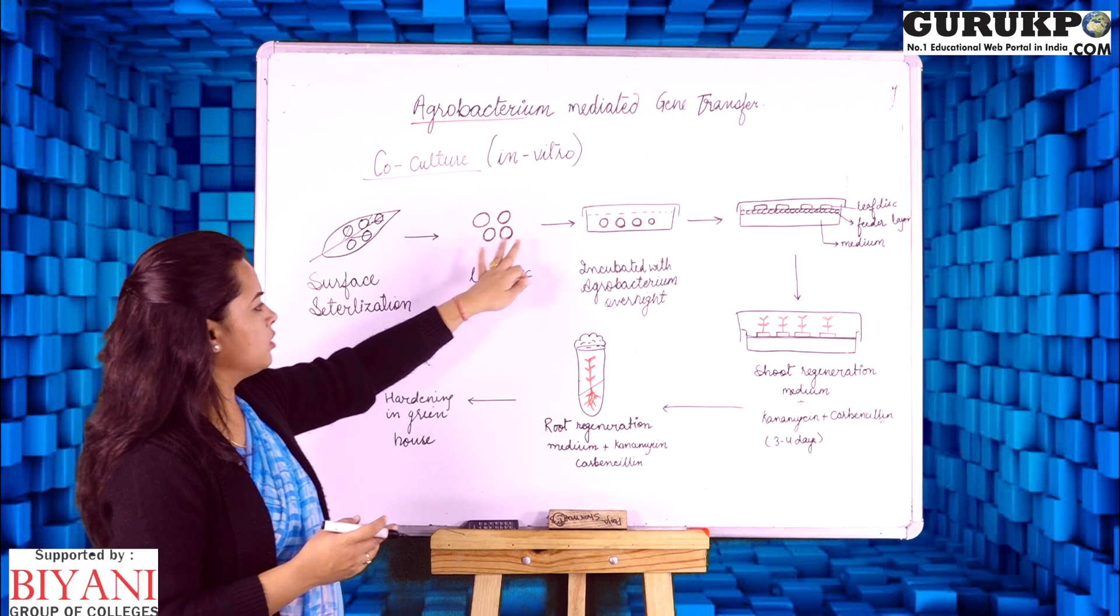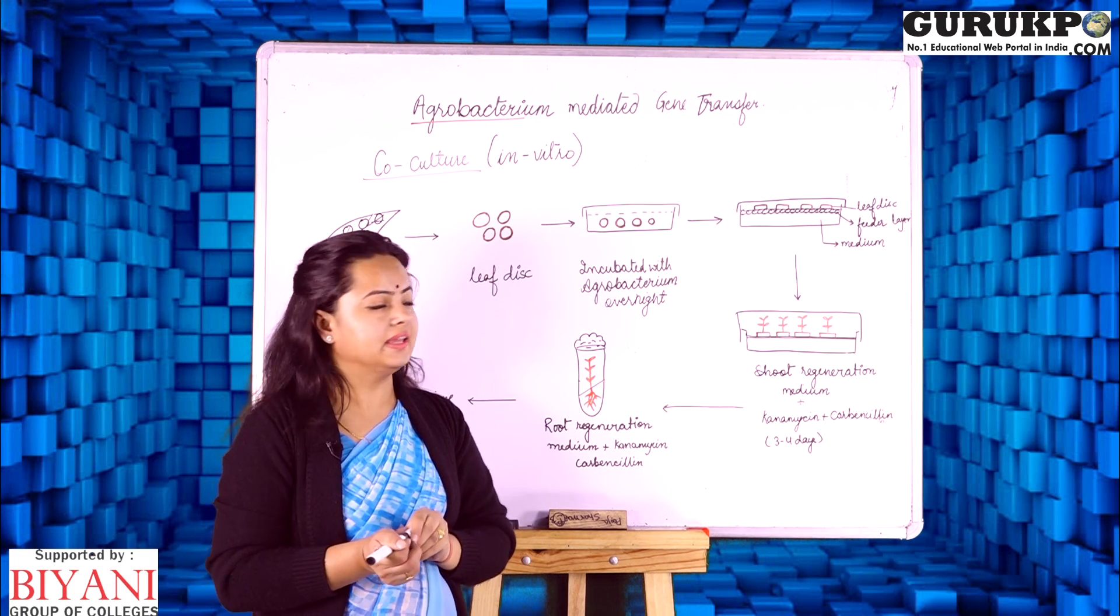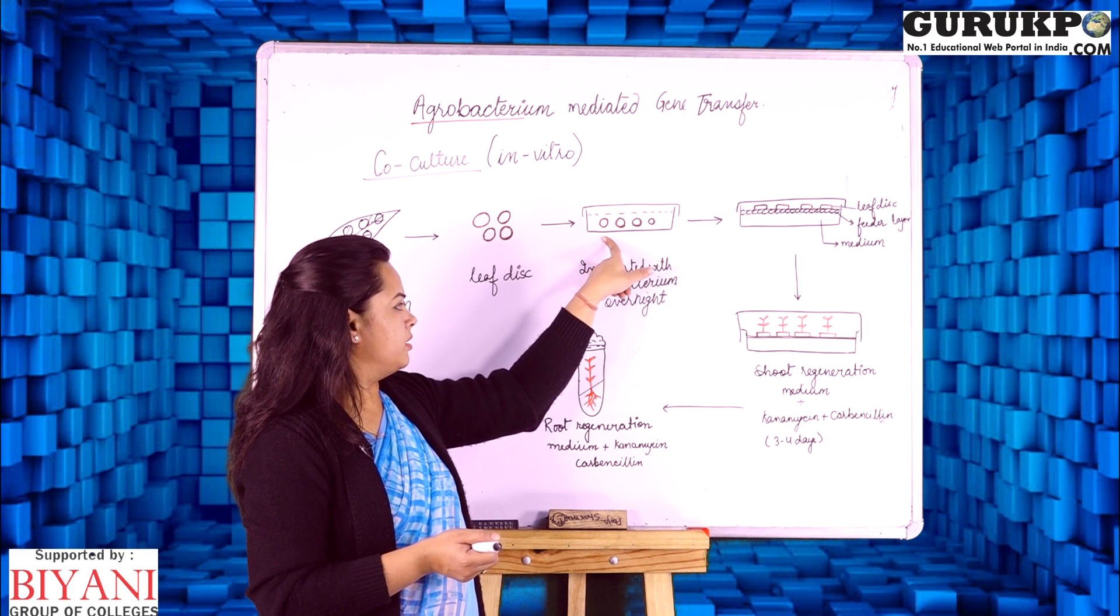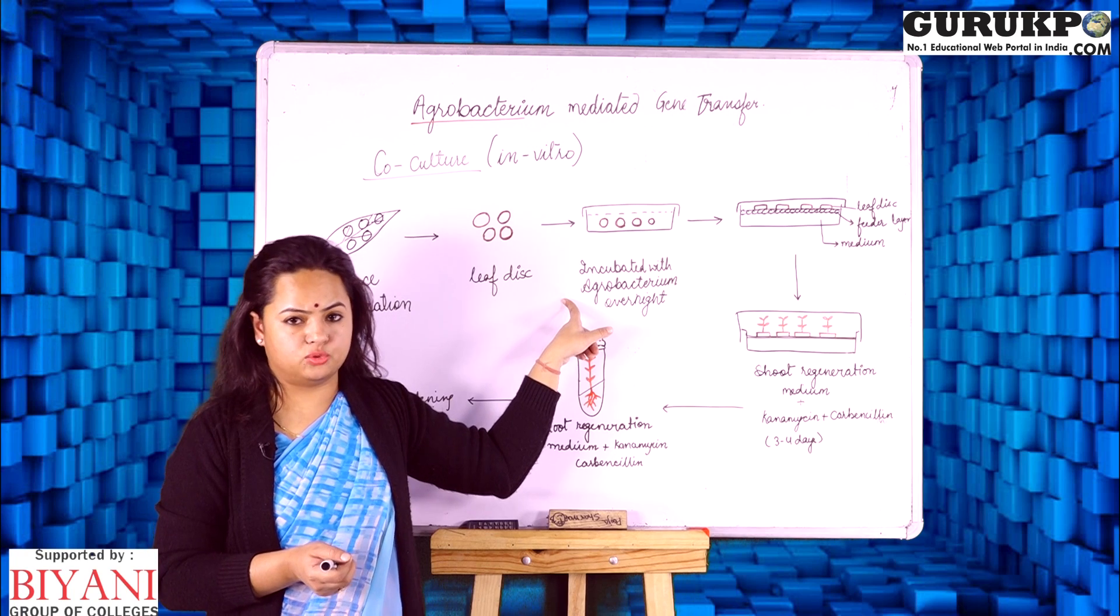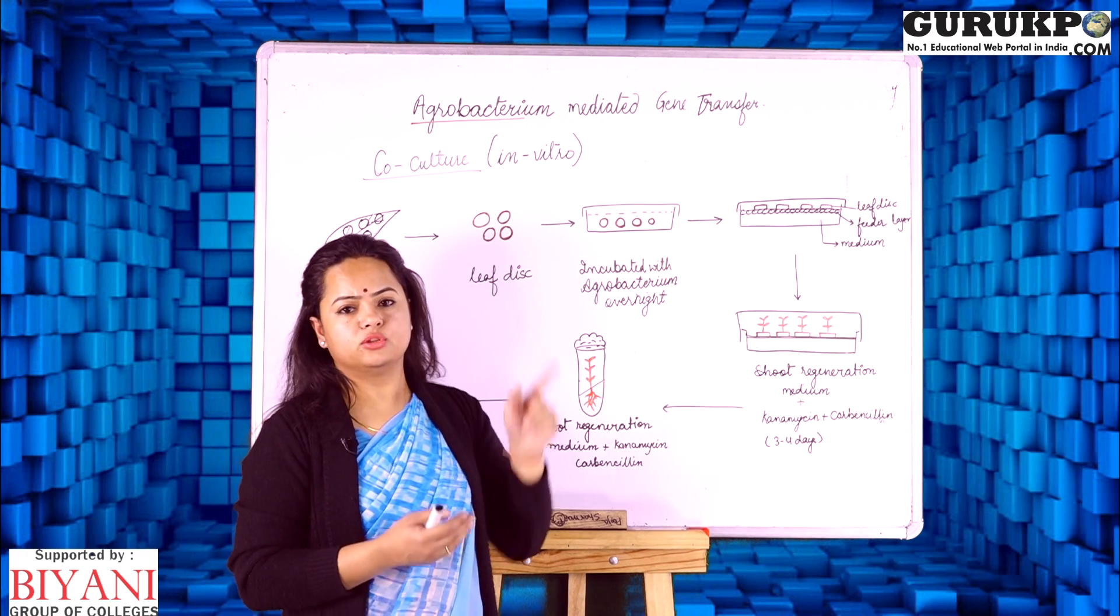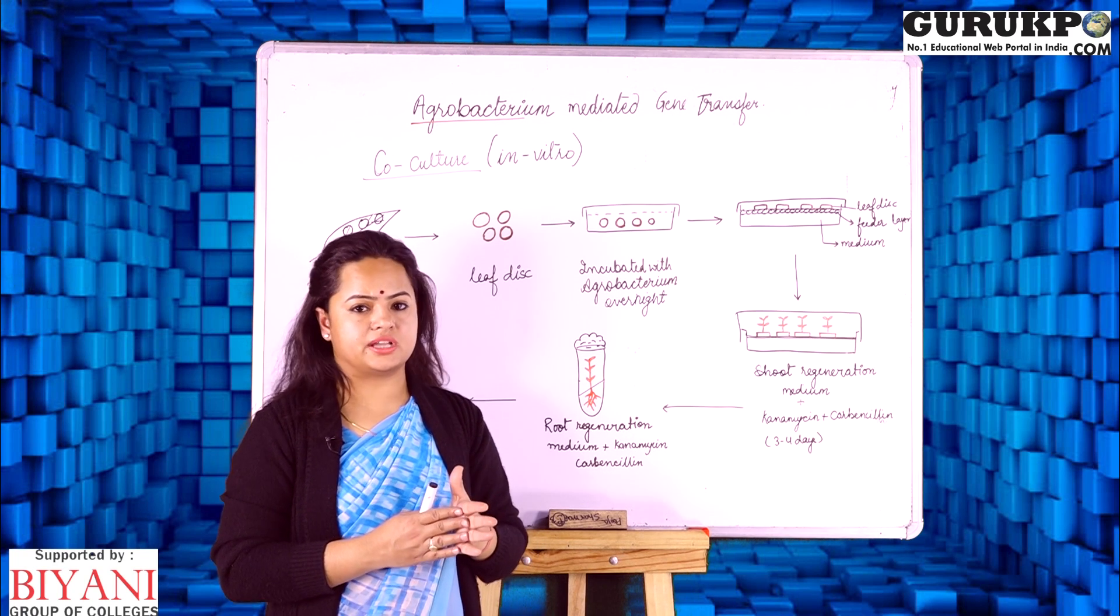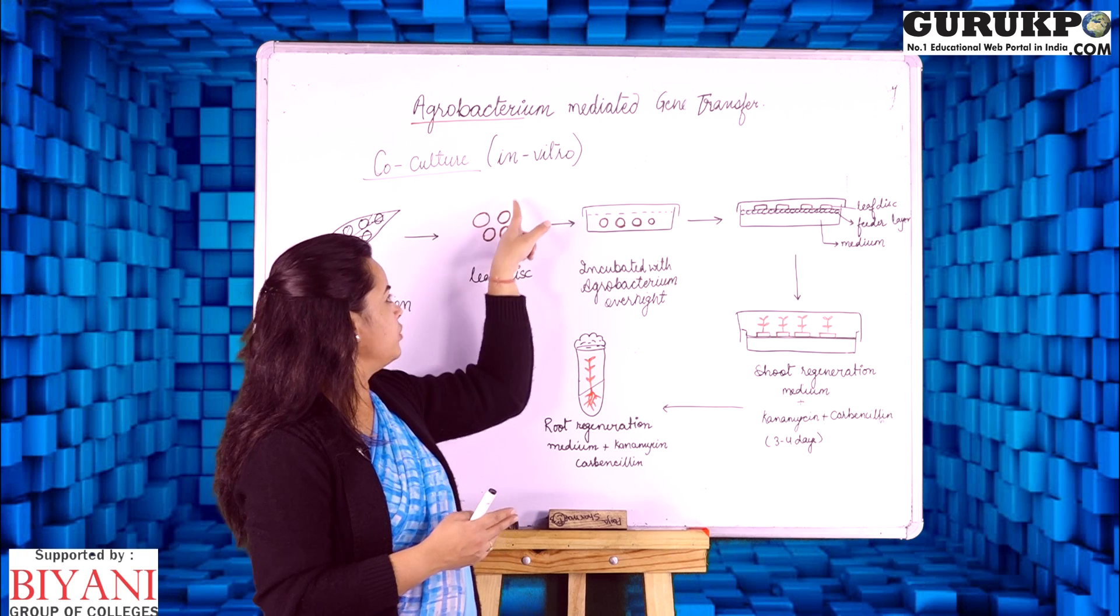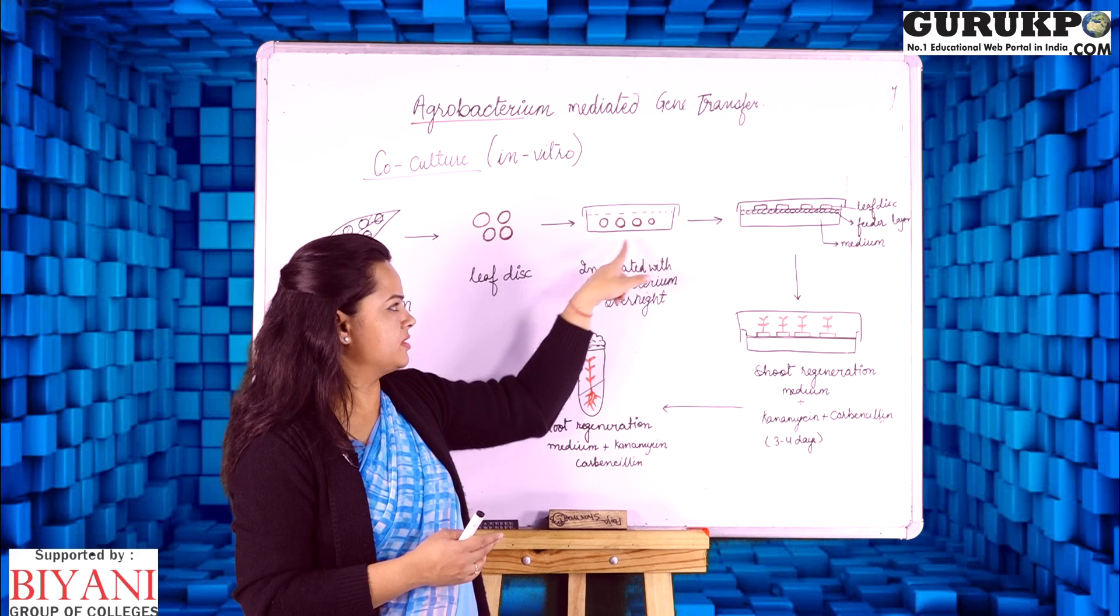These leaf discs could be incubated in a suspension media where agar is lacking and we also suspend the Agrobacterium here for overnight incubation. We assume that due to the overnight incubation of the leaf disc with the Agrobacterium the cell could be transformed because these are wounded cells and Agrobacterium could easily enter these leaf discs.